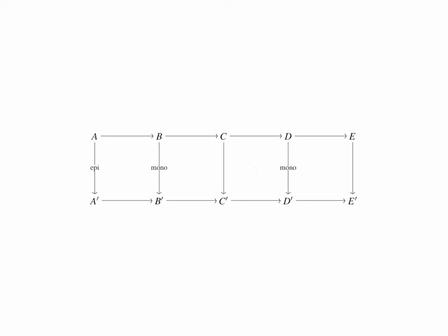If, in addition, we are given that the vertical map from A to A' is an epimorphism, and the vertical maps from B to B' and D to D' are monomorphisms, then we can deduce that the vertical map from C to C' is a monomorphism, and this is the part of the five lemma which we are going to study first.